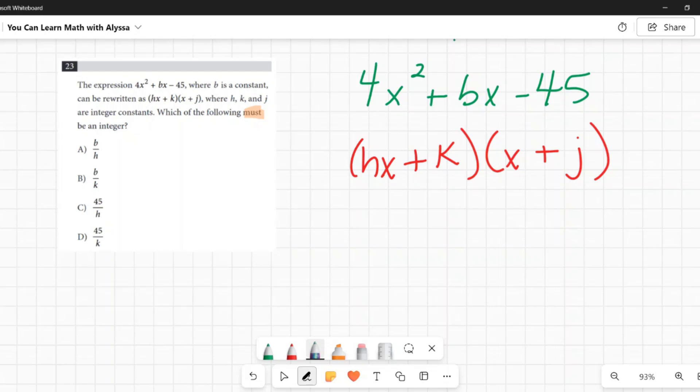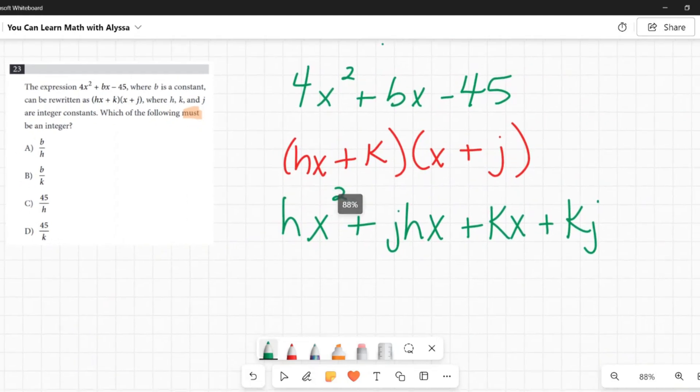Now think about FOIL, like how FOIL works. What happens to get from those binomials up to this? We would multiply the first, we would multiply the outside, the inside, and then the last. So let's do that. Let's multiply these out and see what happens. hx times x would be hx squared. Then I would have my outside, which would be hx times j, so j times hx. Then I would have inside, k times x. And then finally, I would have k times j.